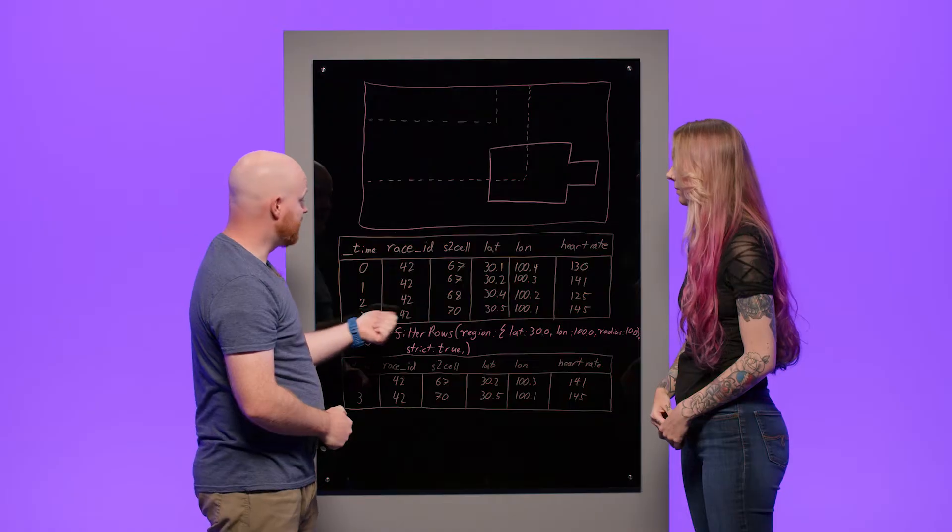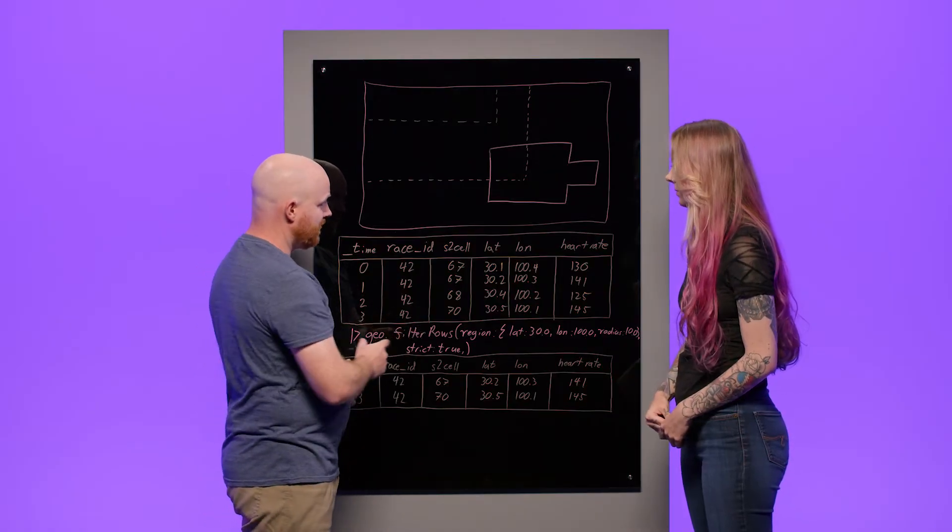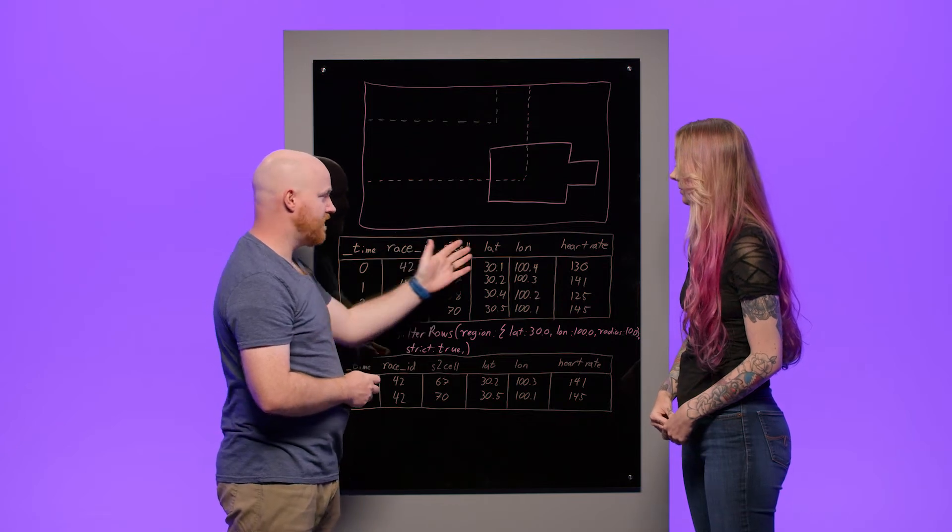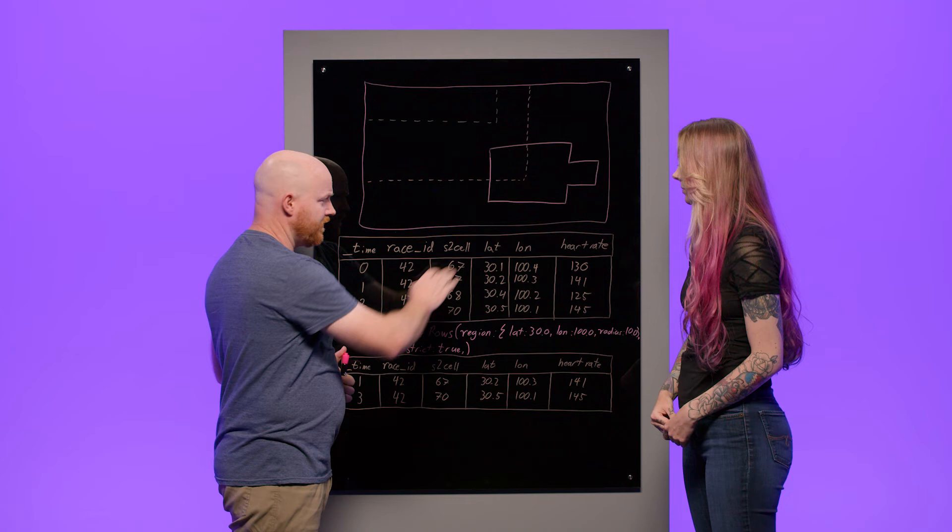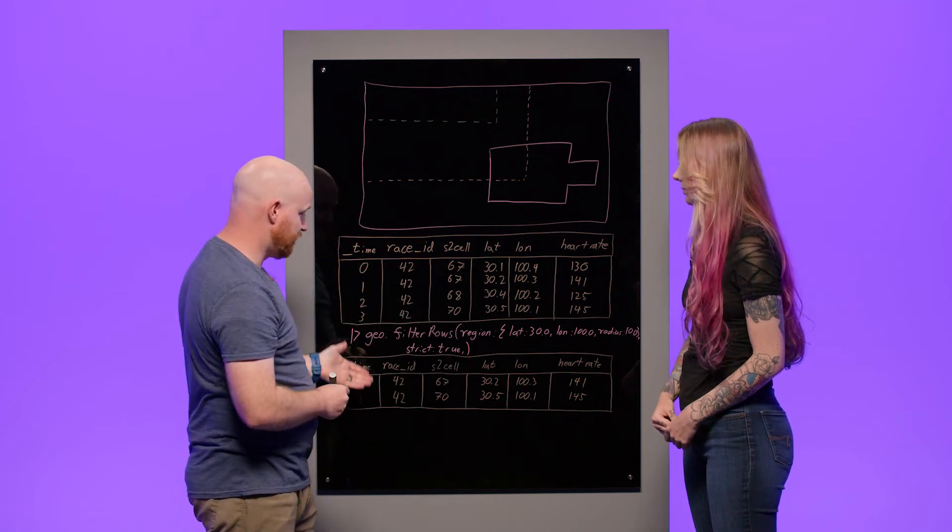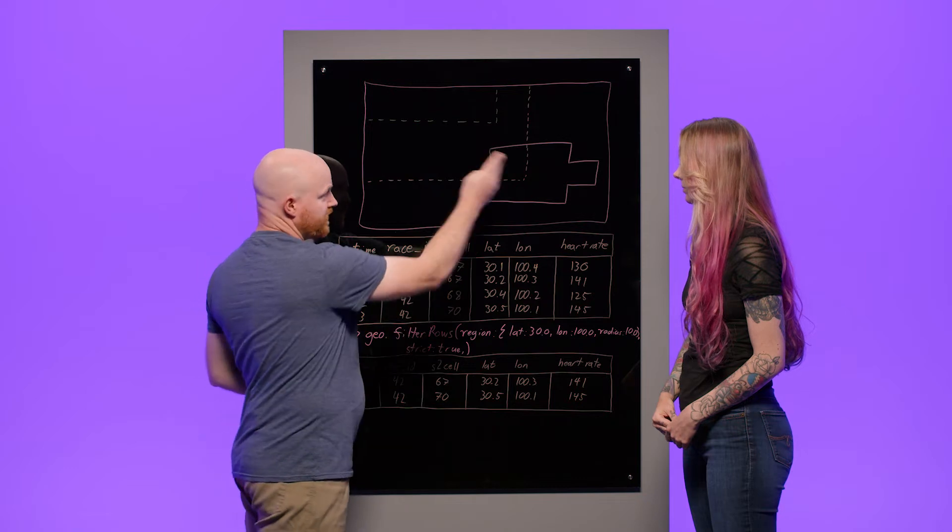How could I use Flux to tell if my track went through a region? Yeah, so again, we're going to come back to the geopackage, and specifically the filter rows function. So this function allows us to take our input data that now has our S2 cell ID, our latitude and longitude data, any other fields that we may have,